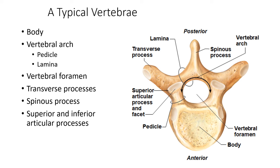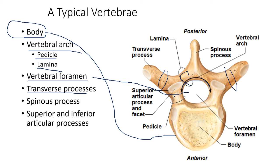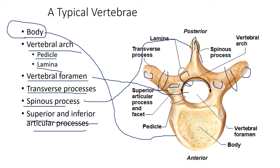The main parts of a vertebra are the body and the vertebral arch, which contains the pedicle and the lamina. We have the vertebral foramen — a large hole for the passageway of the spinal cord. The transverse process connects to the next vertebra. The spinous process is at the back, visible at the midline of the back. We also have the superior and inferior articular processes and facets.